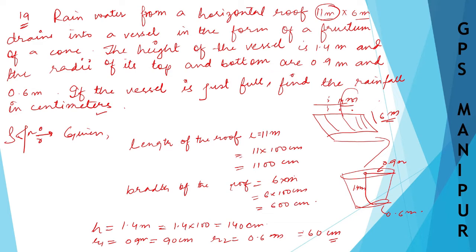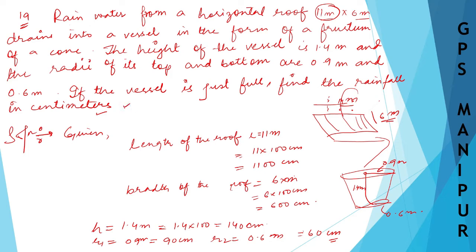Now, if the vessel is just full, find the rainfall in centimeters. So we are going to calculate the rainfall. Therefore, rainfall in centimeters is equal to...